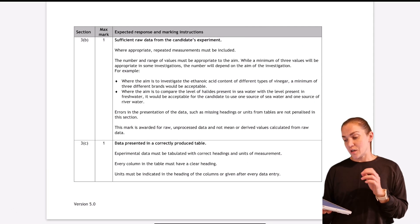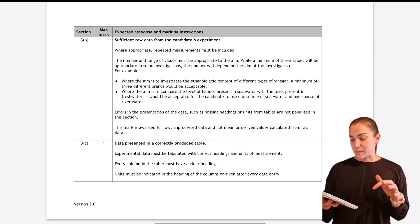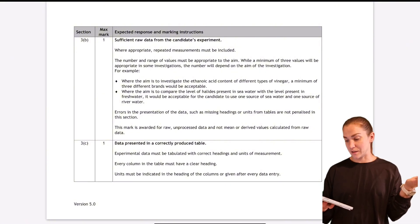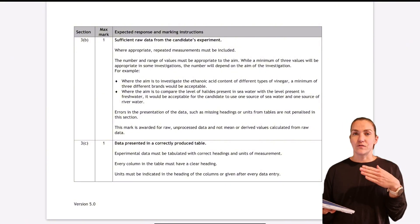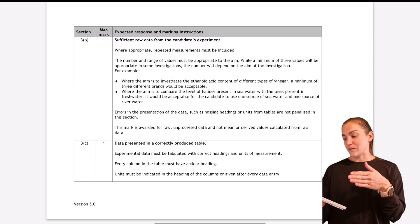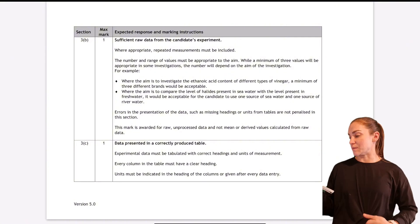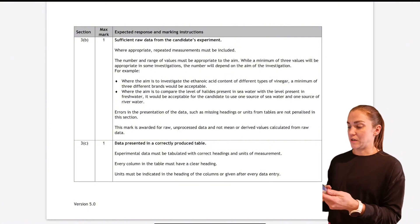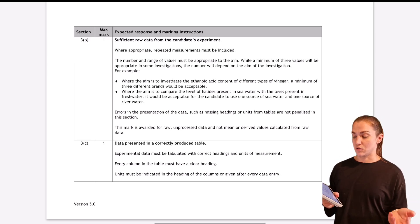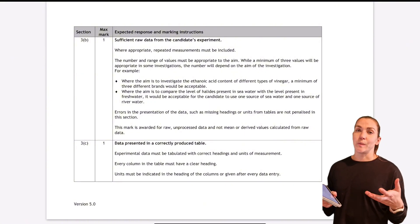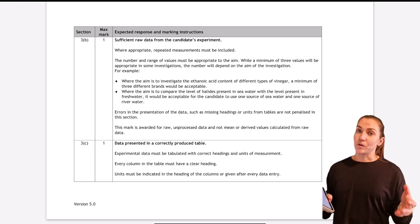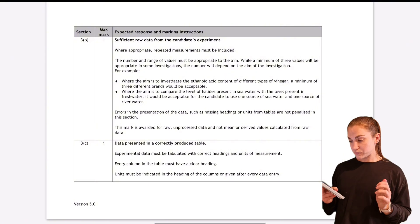For the raw data mark, the data essentially just needs to be appropriate to your aim. You need to have repeats. If you were looking at different concentrations, you'll probably need to have done at least three different concentrations. If you were doing effect of temperature, you probably need at least three different temperatures. If you were looking at the energy released from burning different fuels, you're probably looking at having tested at least three different types of fuels.